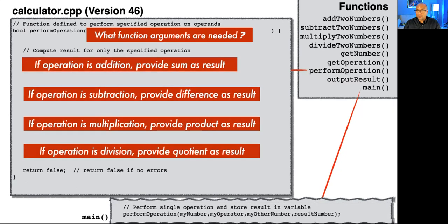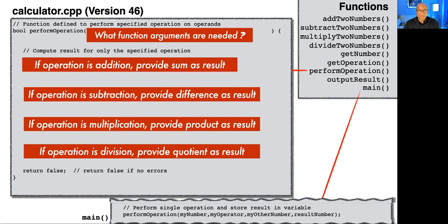We have to ask: how do we phrase our function arguments? Once we have those arguments, how can we express the logic in C++ such that if the operation is addition, what we return — what we store in result — will be the sum? Else, if the operation is subtraction, we want to store the difference. Else, if the operation is multiplication, we store the product. Else, if the operation is division, we store the quotient. By branching inside of this function, we can do the right thing in terms of applying the right operation.